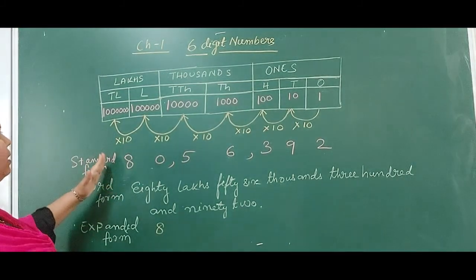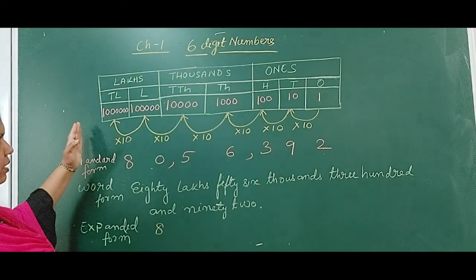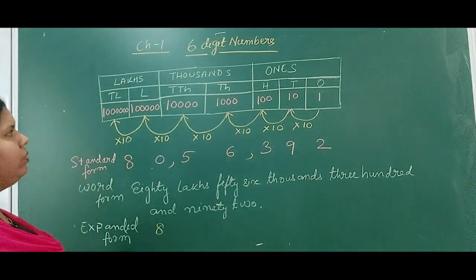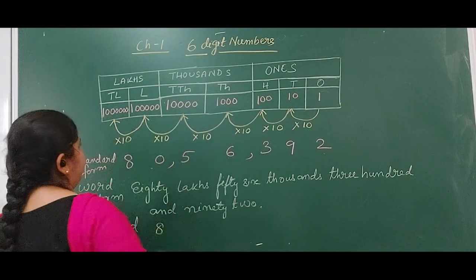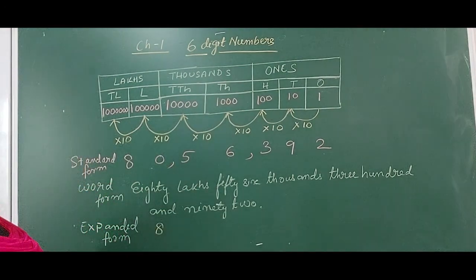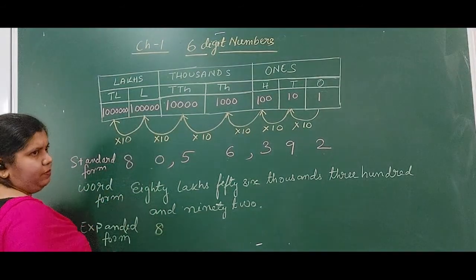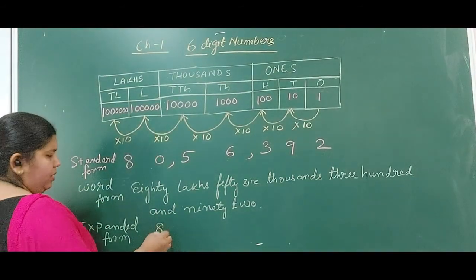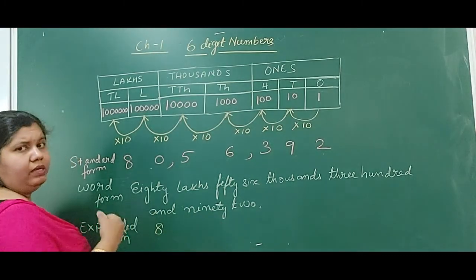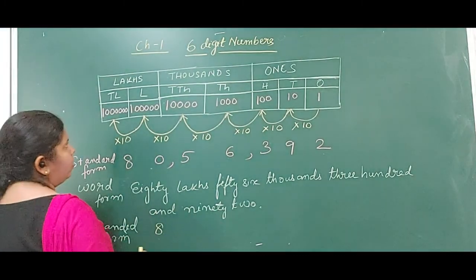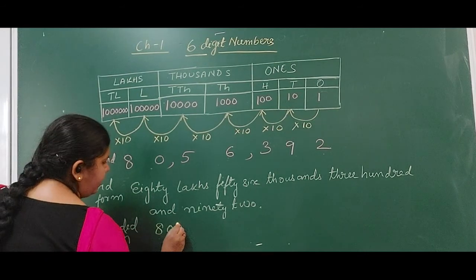We can count the number of digits for the 10-lakhs place. So it will come to 3 plus 2 is 5, plus 2 is 7 — so total 7 digits. When we write the place value of the 10-lakhs digit, first write the digit and then the rest of the digits will be zeros. So total if it is 7 digits, 6 zeros will come.